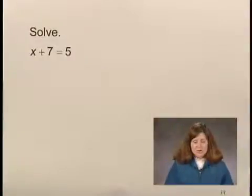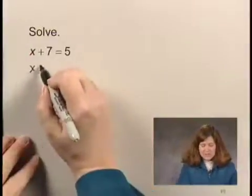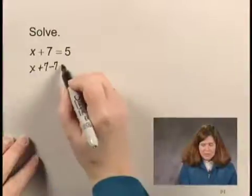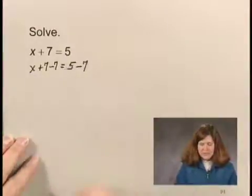In order to solve this equation, we'll subtract 7 from both sides of the equation. That would give us x plus 7 minus 7 equals 5 minus 7.